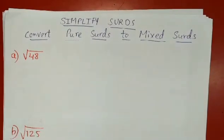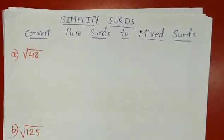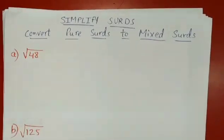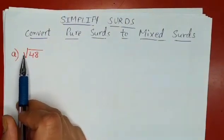Hello students, welcome back to Math With Us. In this video we are going to focus on how to convert pure surds to mixed surds. We have taken a few examples. Let us start with our first example: square root of 48.